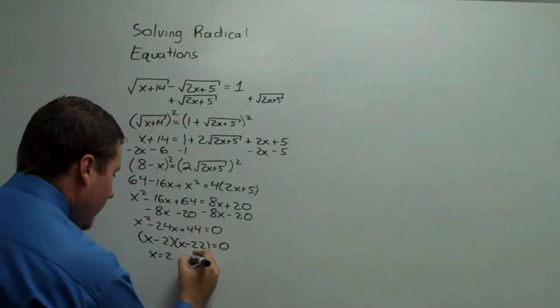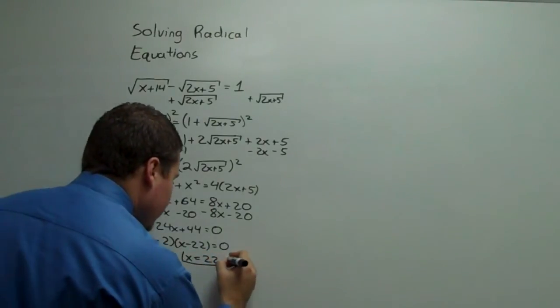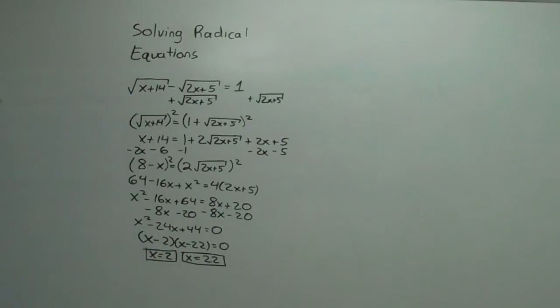So x has to be equal to 2, and x has to be equal to 22. Well, we have to double check on them, but those are our two candidates.